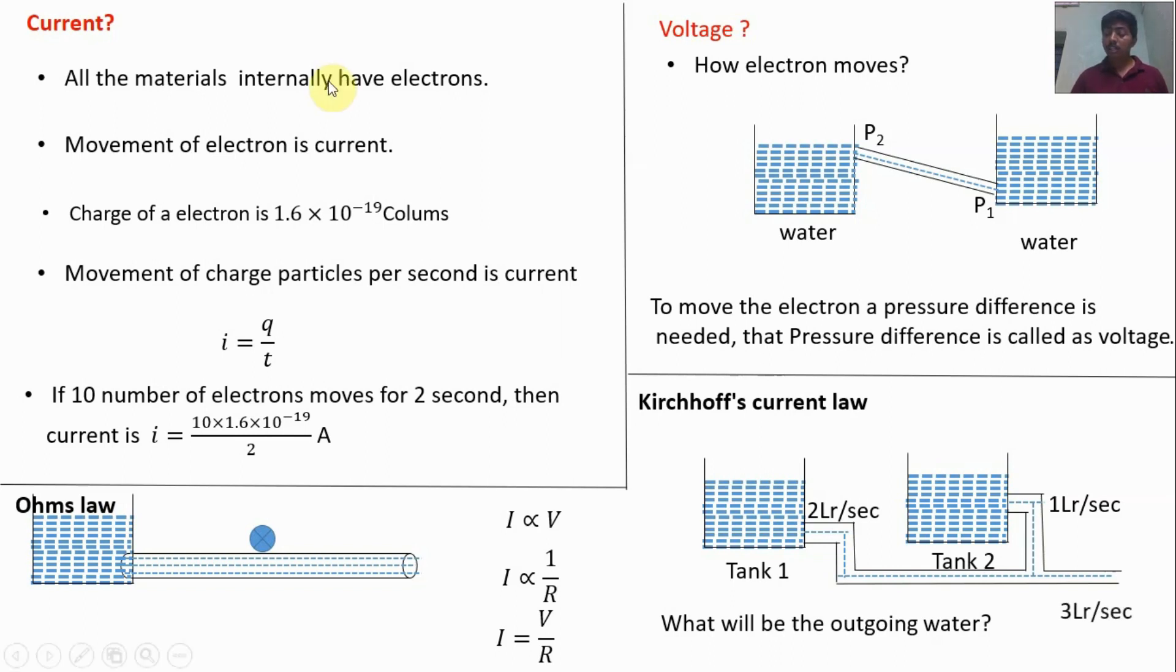The water flow will be 3 liter per second. Why? Sum of incoming water is equal to sum of outgoing water. This is Kirchhoff's current law.